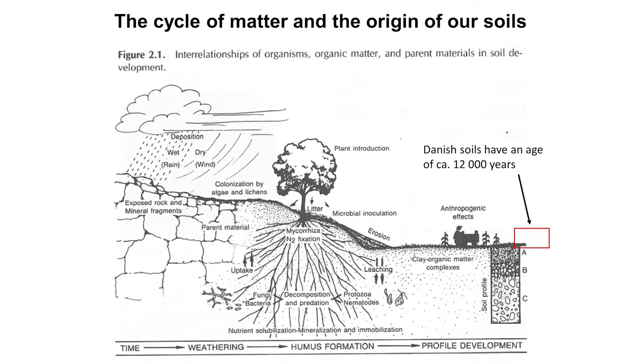The origin of our soils. Some ten to fifteen thousand years ago, Denmark was covered with ice. When the ice retreated, there was nothing but bare rocks, stones, and bad weather. This bad weather gave weathering, and from the weathering we got the first fine dust. On these rocks and stones, lichens and algae were growing. These decayed and gave the first organic matter in which first small higher plants were living. From these first higher plants developed roots and litter, and by the help of bacteria and mushrooms, the first cover of soil developed.